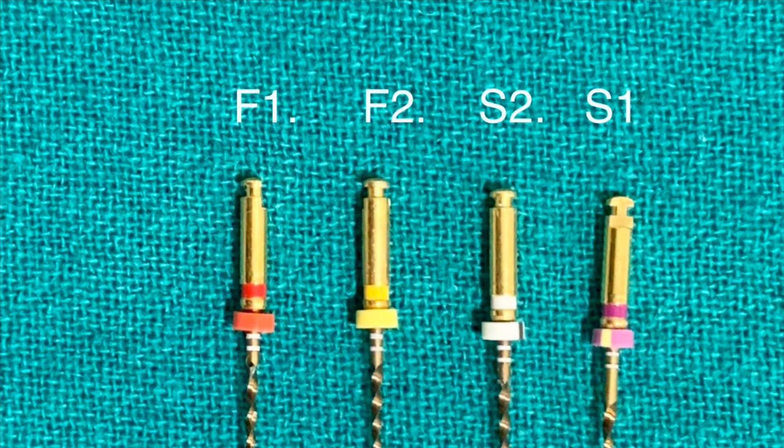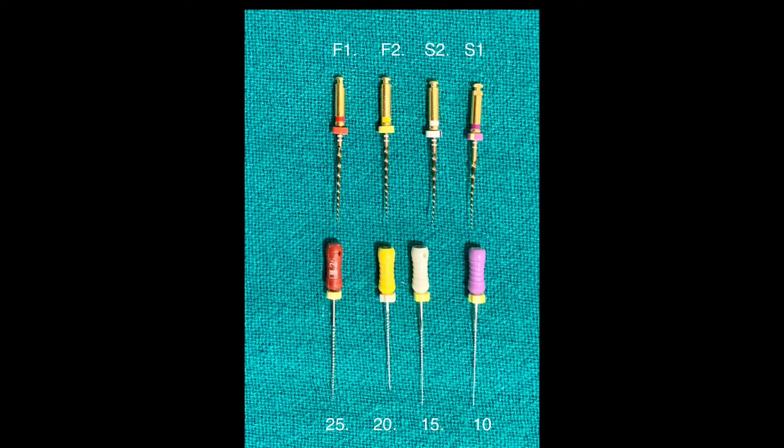Remembering the order of the files is simple. There are identification rings present on their handles. The color scheme is similar to the order that we use in K files: purple, white, yellow, red.